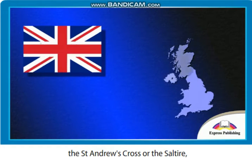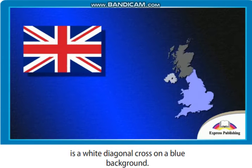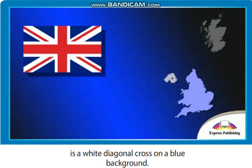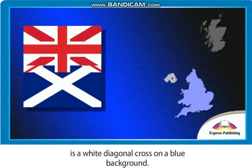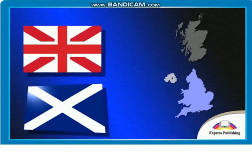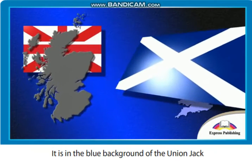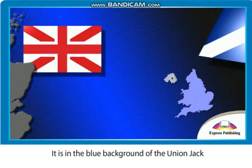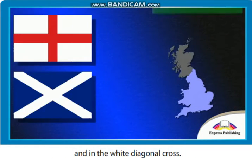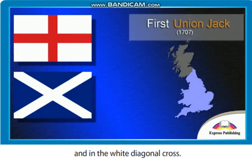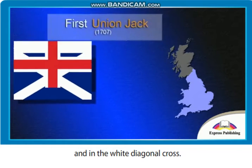The flag of Scotland, the St Andrew's Cross, or the Saltire, is a white diagonal cross on a blue background. It is in the blue background of the Union Jack and in the white diagonal cross.